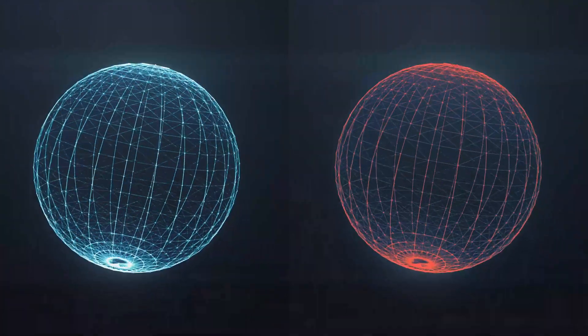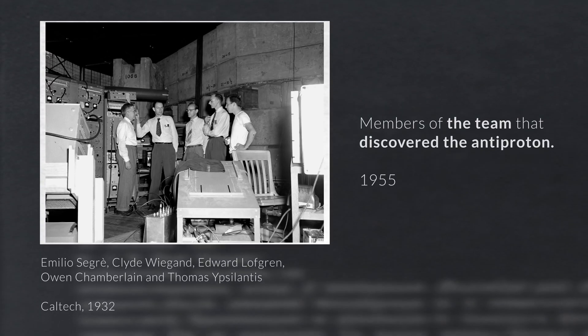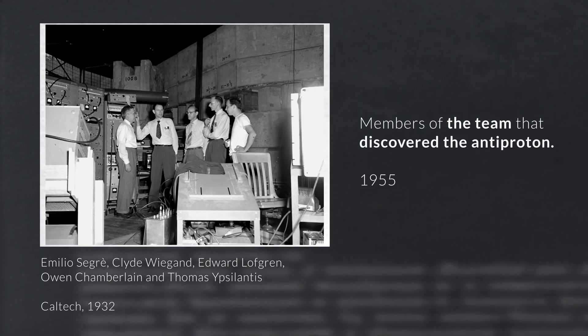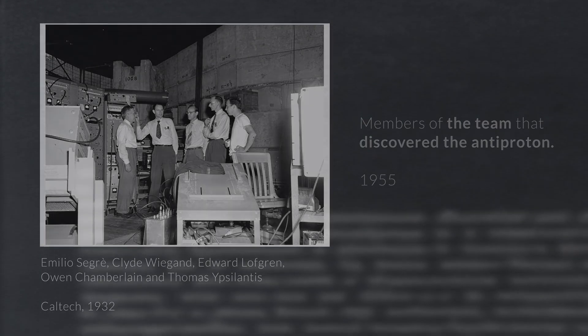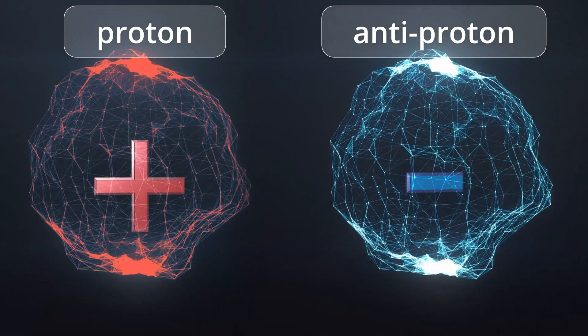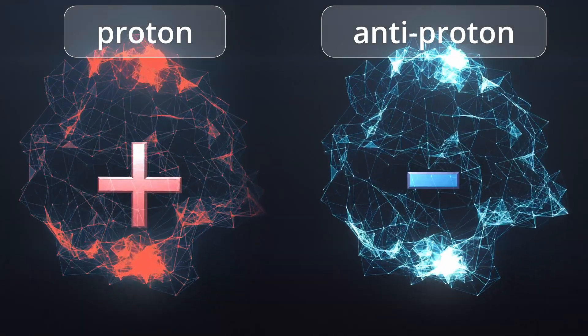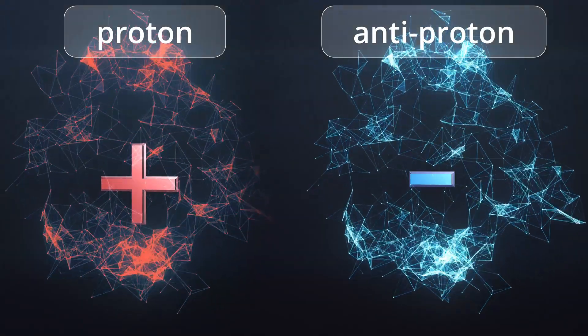After that, 22 years had to pass before another antiparticle was found: the antiproton — a particle identical to the proton, but negatively charged. Today we know that every particle of matter has its corresponding antiparticle, which is like its twin copy, but with opposite electrical charge.